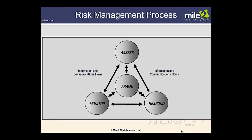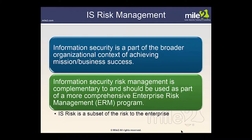More details on this process are described in NIST SP 800-30 Revision 1, 800-37 Revision 1, and 800-39. Information security is part of a broader organizational context of achieving mission business success. Information security risk management is complementary to and should be used as part of a more comprehensive Enterprise Risk Management program (ERM). Information security risk is just a subset — an important one — of the overall risk to your company.